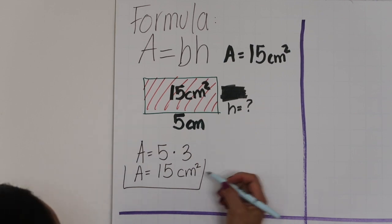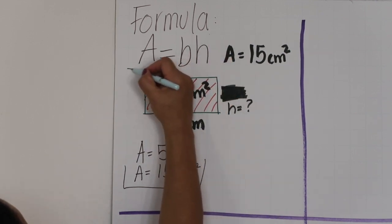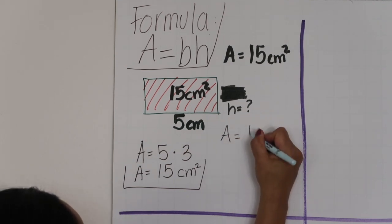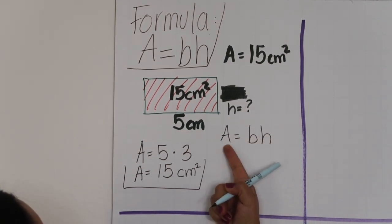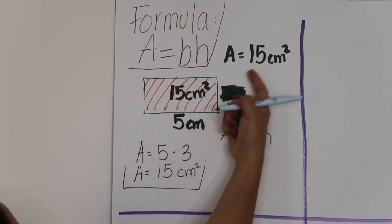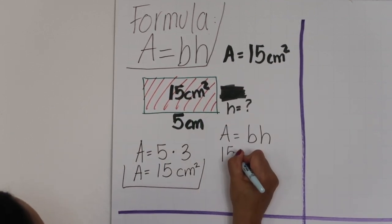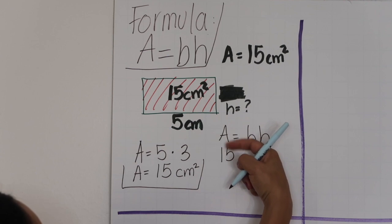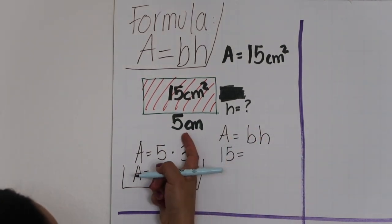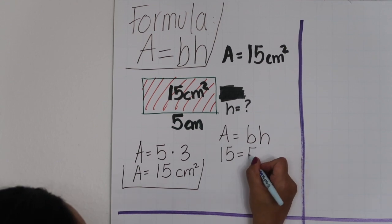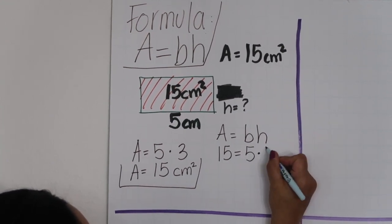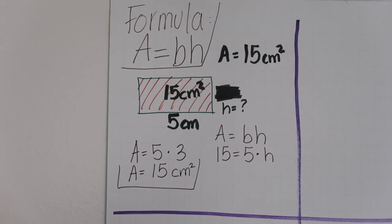In that case, you're going to use the formula and say A equals BH. A represents the area of the rectangle, so you're going to start by writing 15 — substitute that number, the value of the letter — equals 5 for the base times the height that we don't have. We're looking for that.